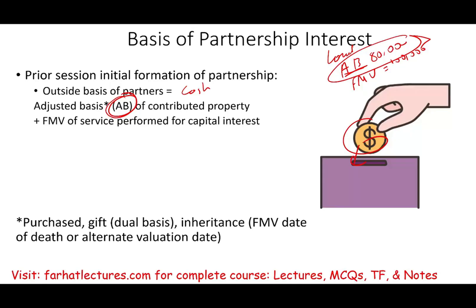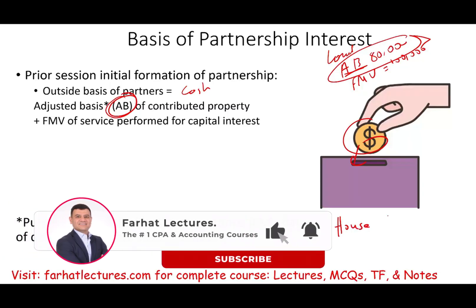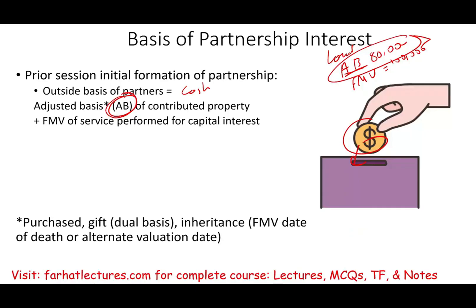Let's go back to our S corporation comparison. If you contributed debt to an S corporation, your basis goes down. Think about it: if I gave you my house with an adjusted basis of $100,000 — and I didn't tell you — there's also a mortgage of $150,000 against that house.